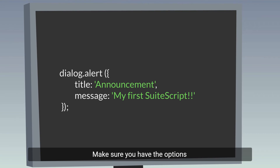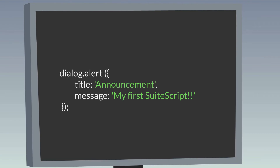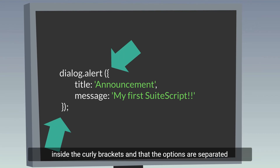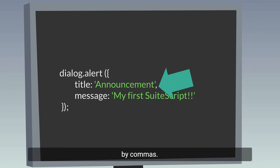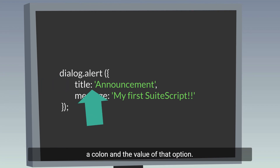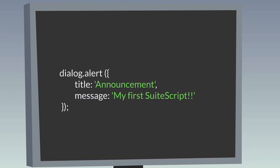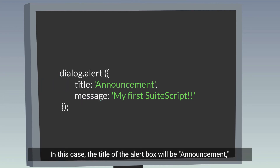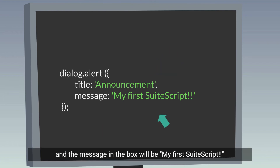Here is what dialog.alert looks like when you add in the options. Make sure you have the options inside the curly brackets and that the options are separated by commas. Each option starts with the name of the option, followed by a colon, and the value of that option. In this case, the title of the alert box will be 'Announcement' and the message in the box will be 'My First Suite Script.'